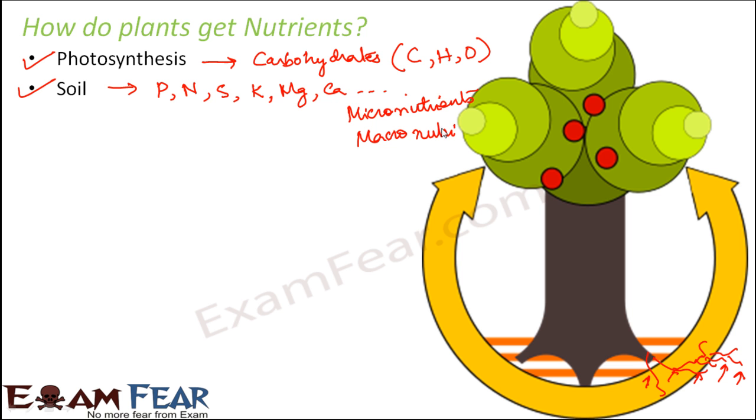So soil is a reservoir of both micro and macronutrients for plants. That is why the quality of the plant directly depends on the quality of the soil. You would have observed that even in your garden, if you want to improve the quality of the plant, you need to take care of the soil. Sometimes people add manure to the soil or fertilizers, enriching the soil with more nutrients.